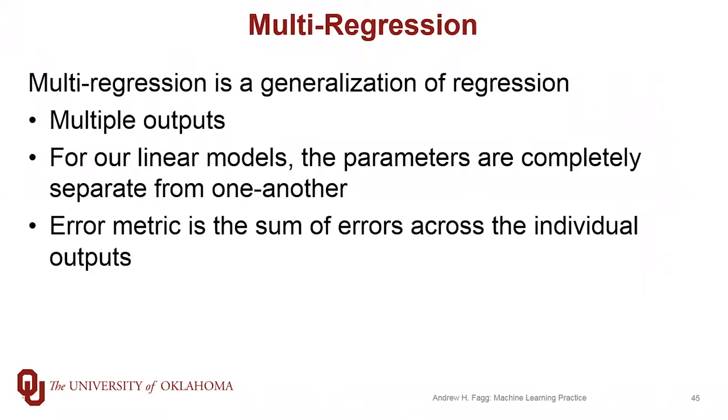This is what's referred to as multi-regression. For the linear models that we build for multi-regression, the parameters are actually independent across the different outputs. So changing a parameter for one output doesn't affect the other outputs. This is not true in the general case, but it is true for the models we've been studying so far.